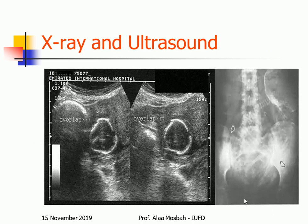This picture shows X-ray and ultrasound. You can see the fetus here — this is the overlapping of the skull bones, which is clearly visible. This is the spine of the baby on X-ray, showing angulation of the spine.